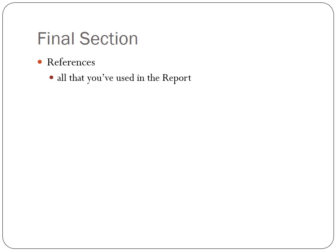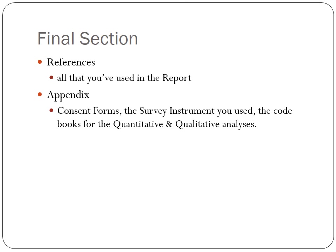In the final section I would expect to find all the references used in the report. In the appendix, I'm looking for: the consent forms, the survey instruments used, and the code books for both the quantitative and qualitative analysis. What I'm looking for there is evidence that you've actually done this research project — evidence that you've interviewed people, conducted a survey, and done some analysis. I hope that you enjoy putting it all together. It's a really important document and a way to wrap up the whole semester as well as your project. Thanks for listening.